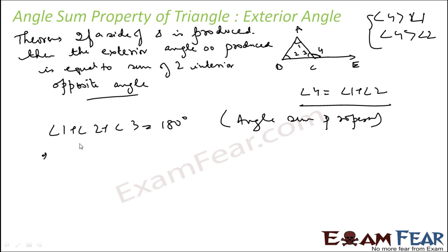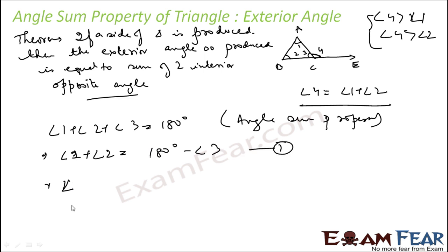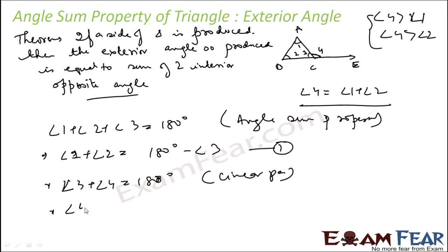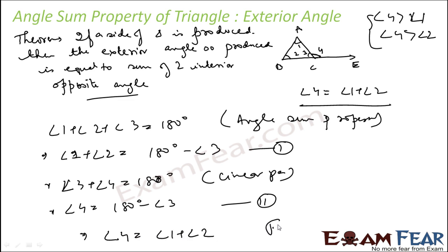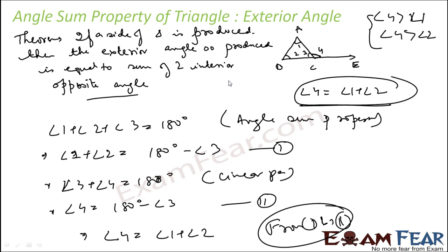So angle 1 plus angle 2 equals 180 degrees minus angle 3. That is equation number 1. For the second equation: angle 3 plus angle 4 equals 180 degrees. Why? Linear pair. So angle 4 equals 180 degrees minus angle 3. That is equation number 2. If you see both equations, the right-hand side is the same. So from this I can say that angle 4 is equal to angle 1 plus angle 2. Using equations 1 and 2, angle 4 equals angle 1 plus angle 2. And that is what I had to prove.